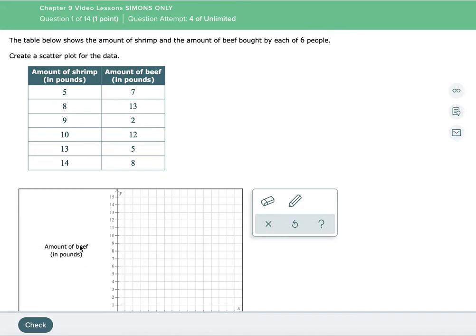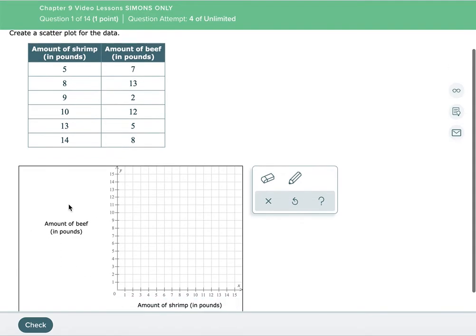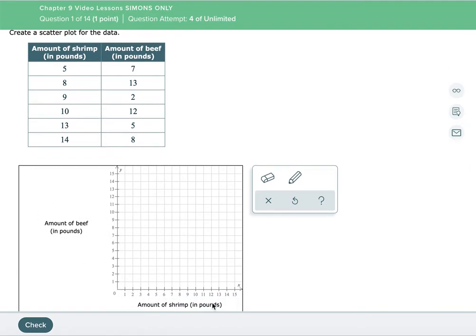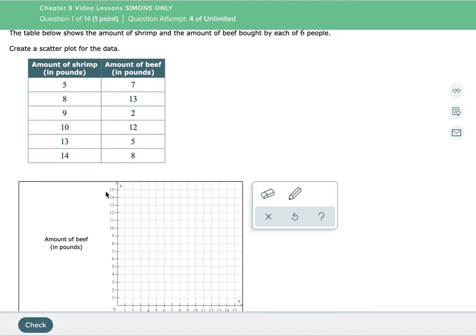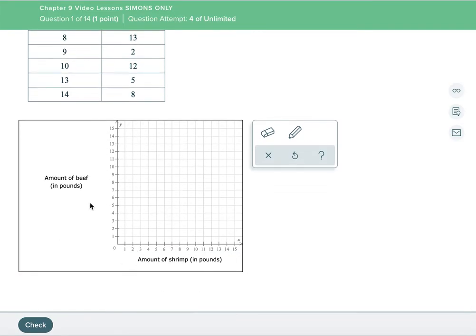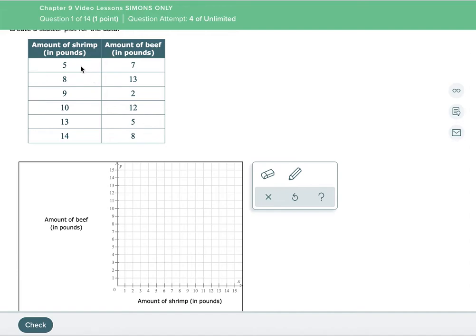So what we're looking at is does the amount of beef that is sold depend upon the amount of shrimp that sold. So let's put our information in. We know that shrimp is going to be our X, beef is going to be our Y, so you look at it across and you say our first point is going to be the point five seven.